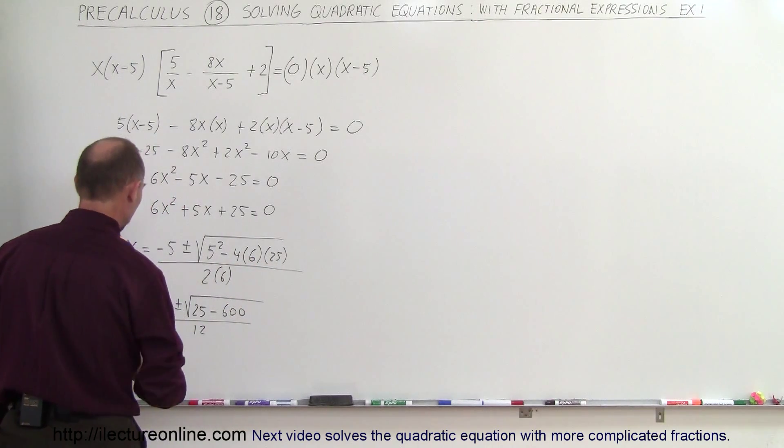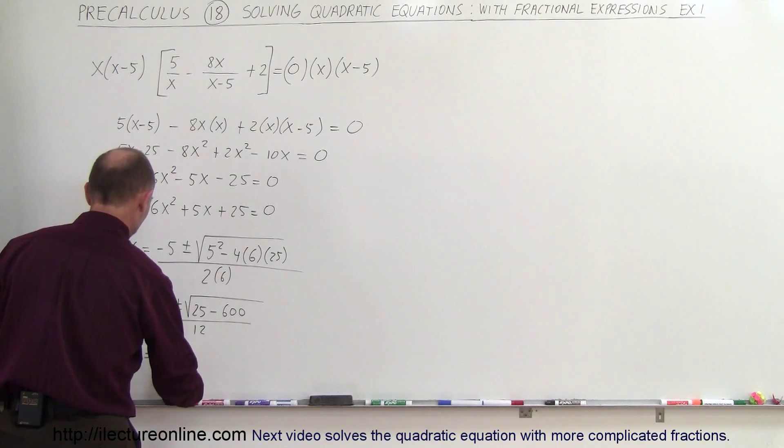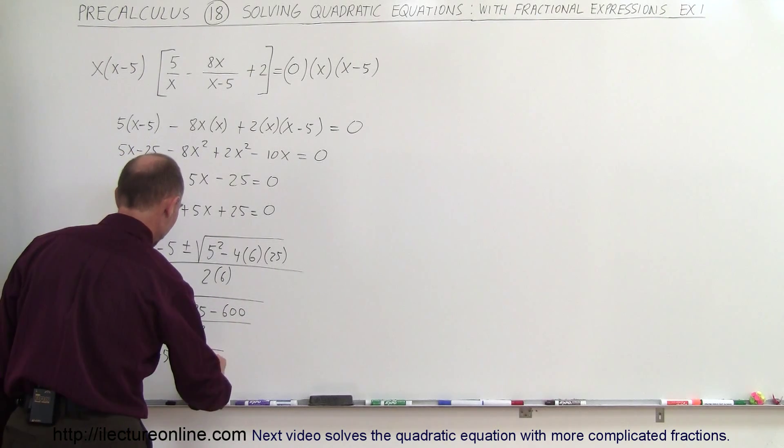The whole thing divided by 12, and so x is equal to minus 5 plus or minus the square root of minus 575, divided by 12.